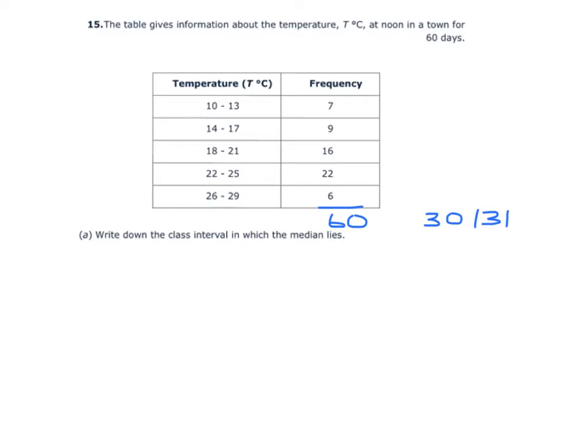I have 7 in the first group, which means I have 16 by the end of the second group. Another 16, which means I have 32 by the end of the third group. So that tells me that the median lies in the group 18 to 21.